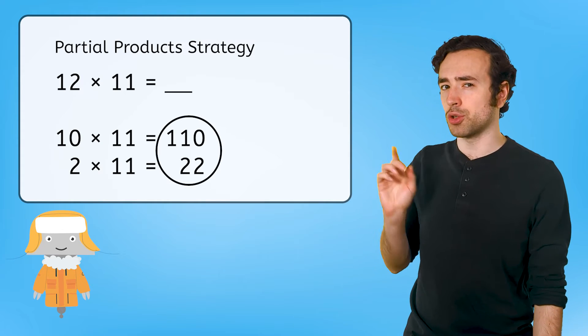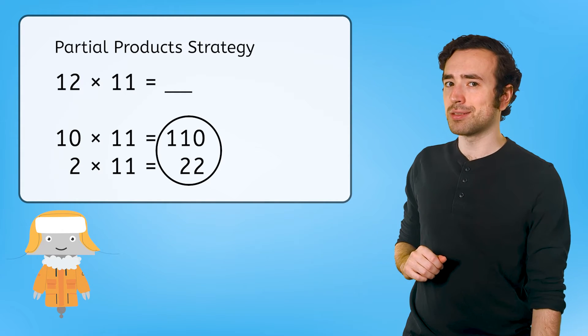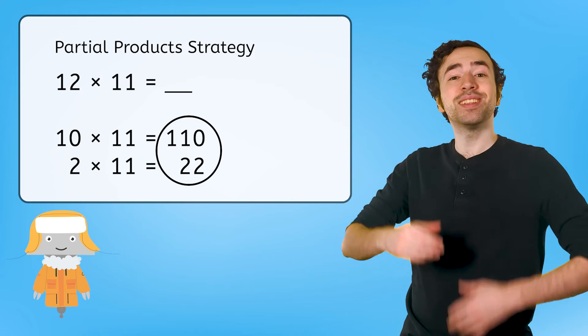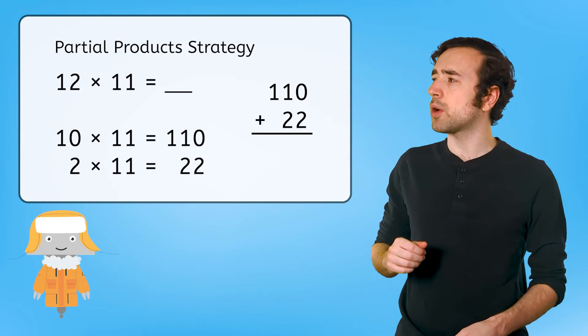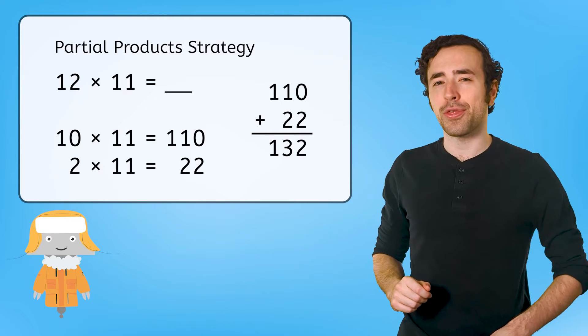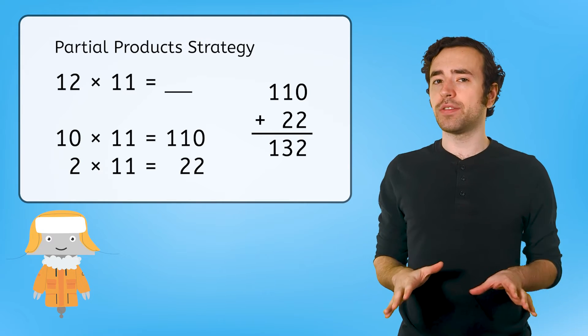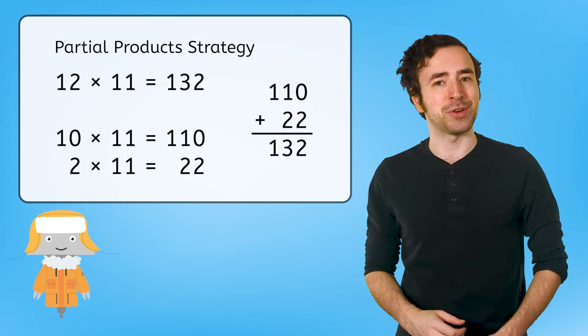Now that we have these partial products, what should we do next? We need to add them together. 110 plus 22 equals 132. Which means 12 times 11 equals 132.